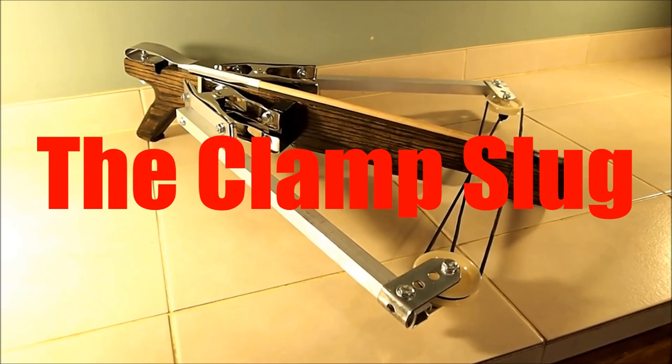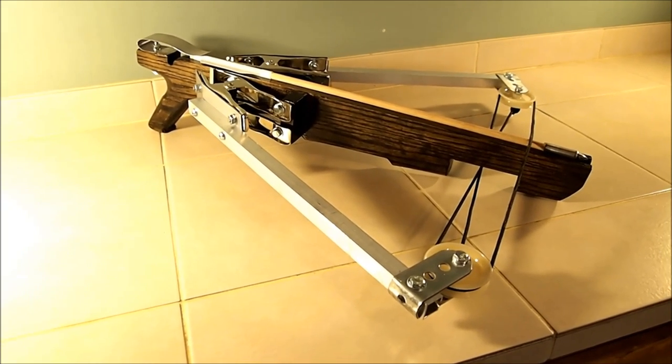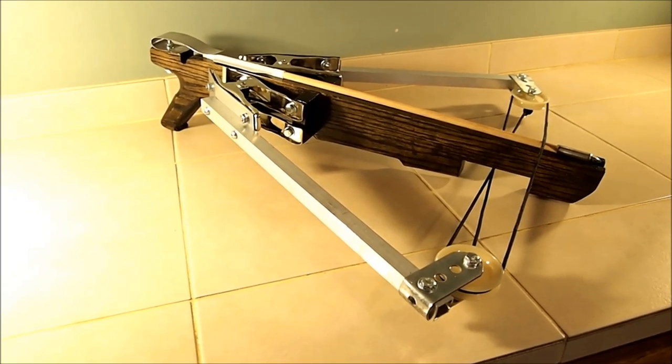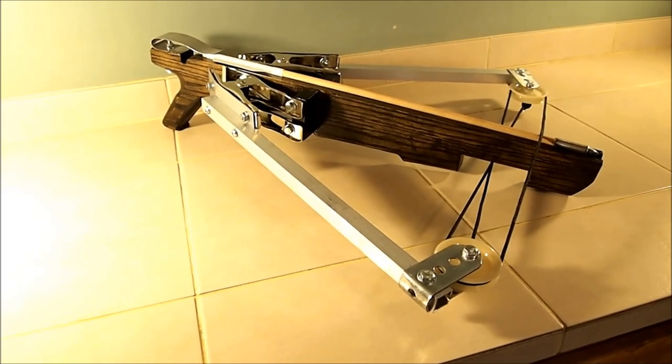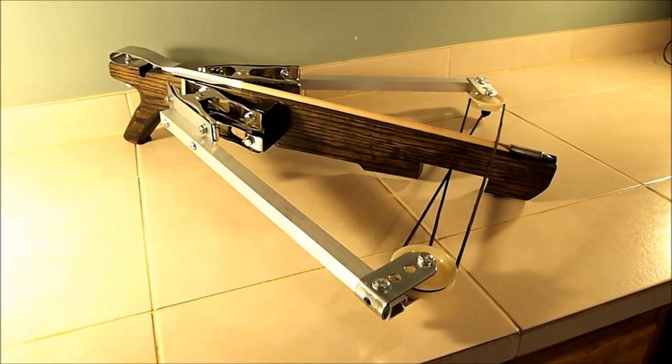Today we're making another reverse draw crossbow, but the difference between this one and the last one is that this one holds down the arrow from the front and the back end, and this one doesn't involve any fiberglassing. We're also going to be learning how to make a new, much more sturdy arrow. Let's get to work.